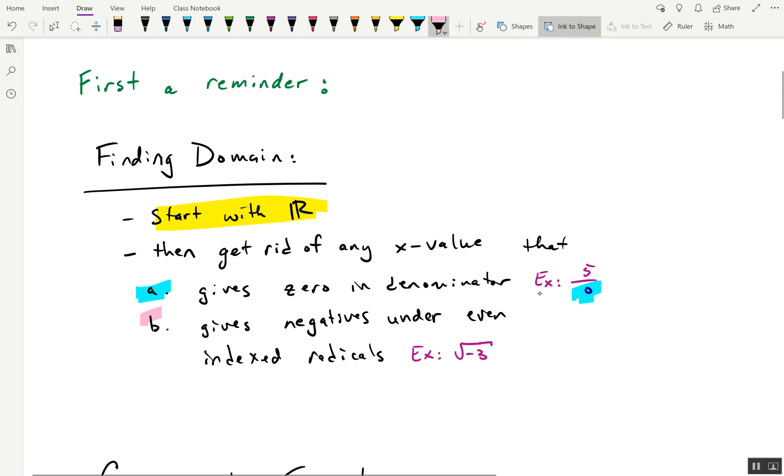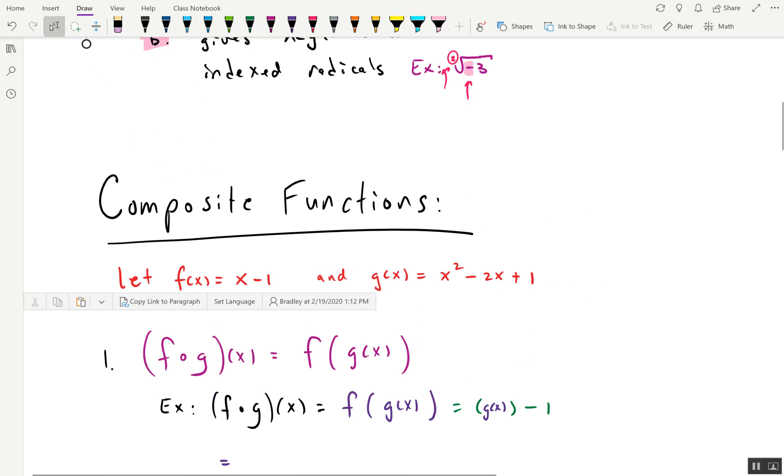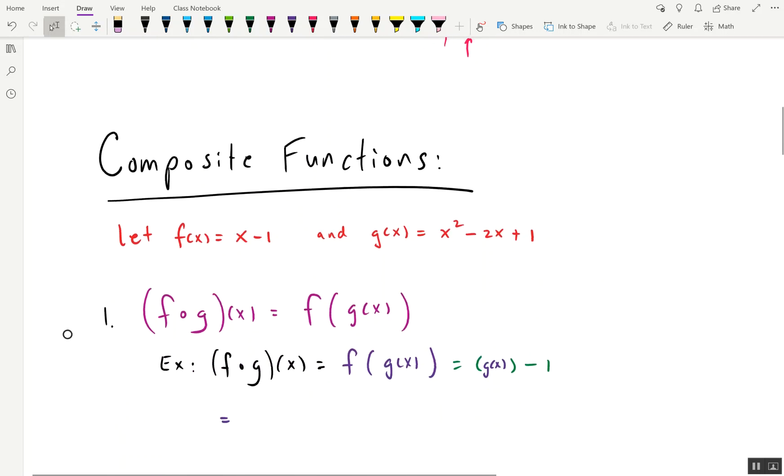The second problem is we cannot have a negative under an even indexed radical, meaning the radicals right there. This happens to be a 2, it's a square root. If it's a 4, it's a fourth root. Whatever the case may be, we can't have a negative underneath there if we have an even number in our index. So we've got to kick out numbers that give us negatives. So no negatives under square roots really is what it comes down to for most general algebra problems. So with that in mind, let's move on to composite functions.